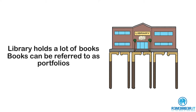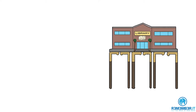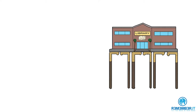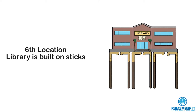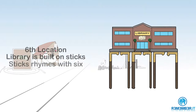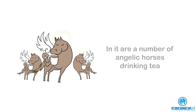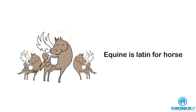The sixth location is the CFAVIL library, built on a large set of thick sticks. The library holds a lot of books, and books can also be referred to as portfolios. Therefore, this is where the portfolio management element of the syllabus is covered. You know it's the sixth location because the library is built on sticks, and sticks rhymes with six.